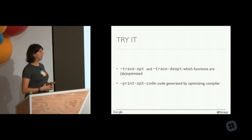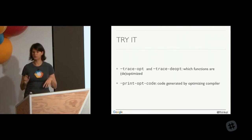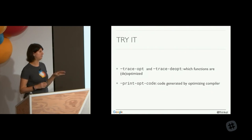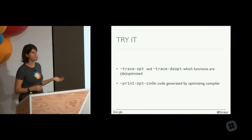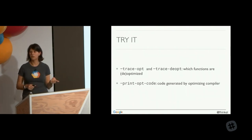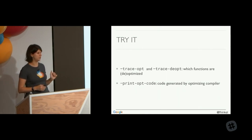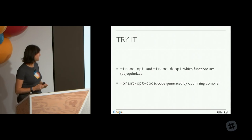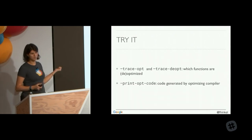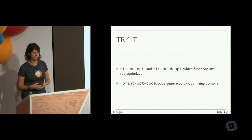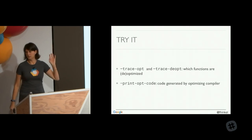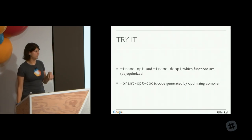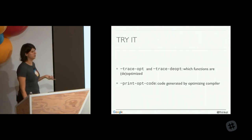If you want to play around with any of that in Node, you can use --v8-options, for example --trace-optimization or --trace-deoptimization, which list which functions are being optimized and when they're being de-optimized. In Chrome, use --js-flags= and then the flag name. You can also print the assembly code if you want to see it, and there's a long list of more options available.